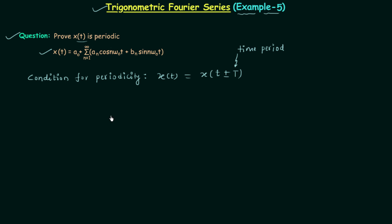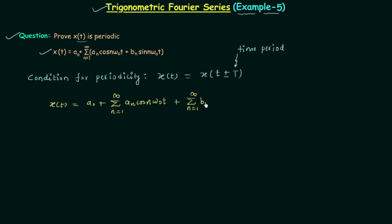Now we will focus on the trigonometric Fourier series expansion. We can write Xt equal to a₀, the DC component, plus summation n equal to 1 to infinity of aₙ cos(nω₀t), plus summation n equal to 1 to infinity of bₙ sin(nω₀t). Now we will check the condition for a signal to be periodic.